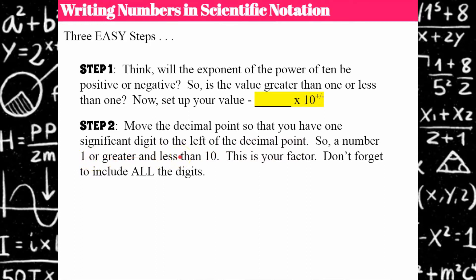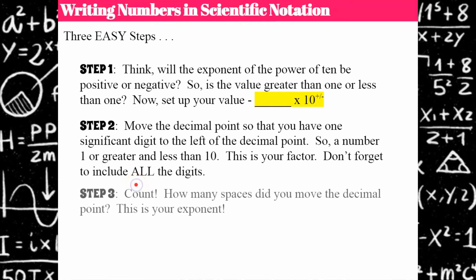Now that we have a plan, step two: move the decimal point so that you have one significant digit to the left of the decimal point — a number that's one or greater and less than 10. This is going to be your factor. Don't forget to include all the digits; you don't want to change the value of the number. And the last step, step three: count how many spaces you moved the decimal point — that becomes your exponent.